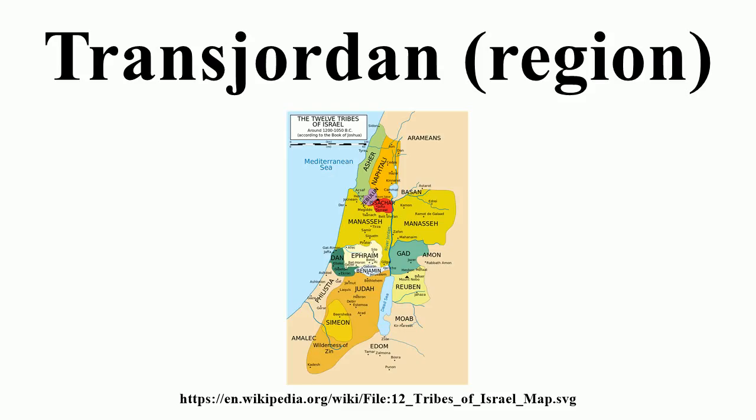This map of the tribal allotments of Israel shows the two and a half tribes settling east of the Jordan. The British Mandate for Palestine shows the Emirate of Transjordan in brown. In the map of Jordan from 1948 to 1967, the east bank is the portion east of the Jordan River, and the west bank is the part west of the river.